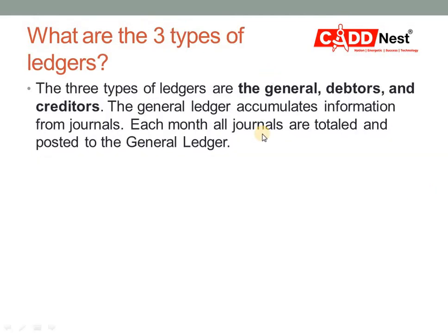So what is a journal? In ledgers we have three types: journal ledgers, debtors, and creditors. General ledgers accumulate information from journals. We do ledger entries after doing journal entries — that is where the journal comes in. Each month, all journals are totaled and posted into the general ledger. In the general ledger, we take all the details from the journal entries.